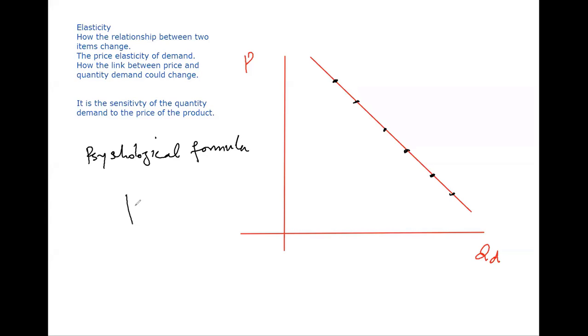It means there's an unknown formula which is in our head. We get the value of price and we tend to determine quantity demanded. It means there's a calculator in our head, a psychological calculator. We don't know the exact formula we use when we decide what to buy.